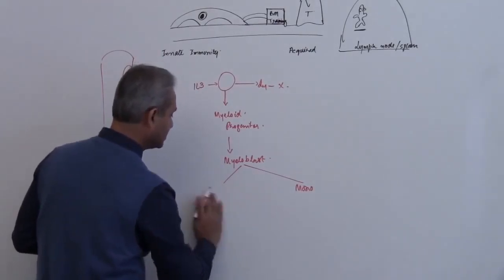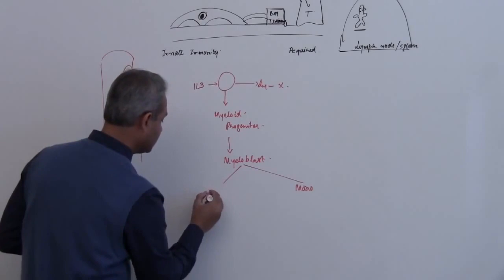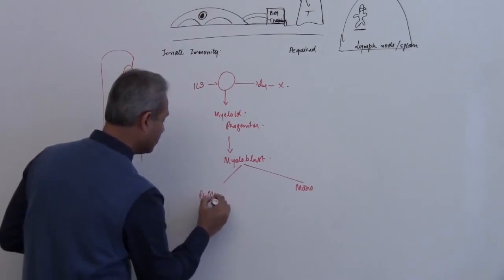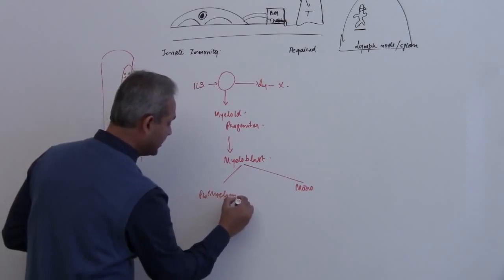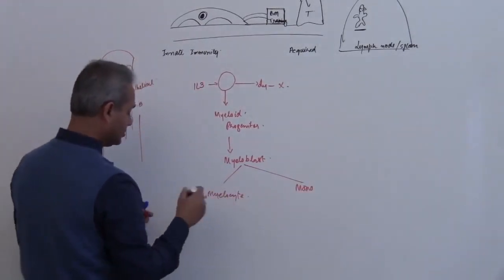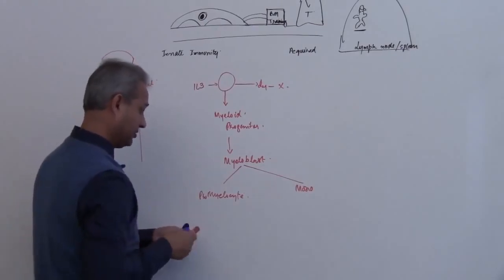So what would I say here? I will say myelopromyelocyte, and here monocyte related. Now what is important, very important thing is this.